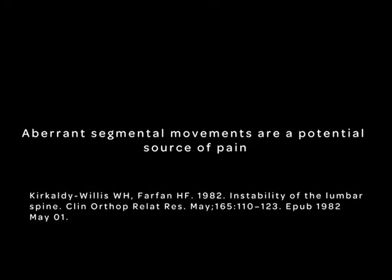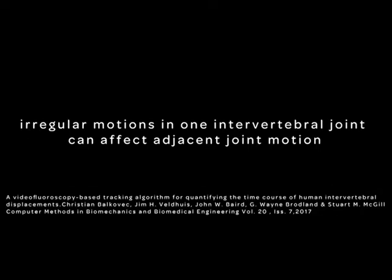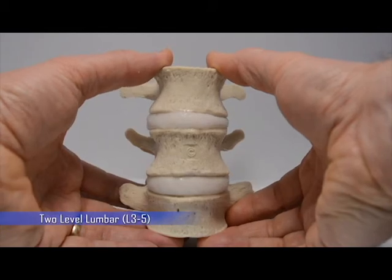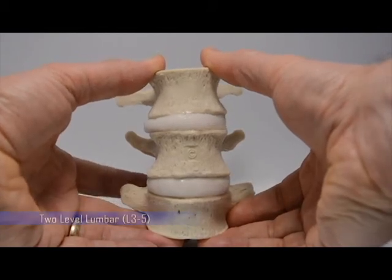Spine modeling research findings for the practitioner to engage with their patients in a better understanding of their mechanical pain triggers. Aberrant segmental movements are a potential source of joint pain, and irregular motions in one vertebral segment will cause aberrant movement of the adjacent segment.